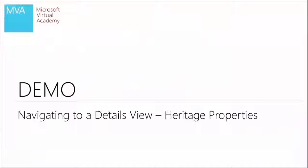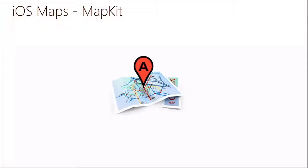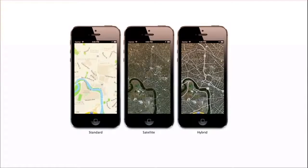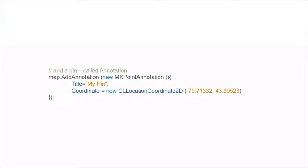Now we can look at a map. It's fairly easy to use MapKit within iOS. There are two ways to set up maps — you could do a map within your application, or go outside to the native map application. To do a map, it's as simple as newing up a new MKMapView and setting the view of your UIViewController to the map. You have different map types: standard, satellite, hybrid — similar to Bing Maps on Windows Phone. To add an annotation, which is basically a pushpin, you do addAnnotation with an MKPointAnnotation, set the title, and set the coordinate to tell it where to place it.